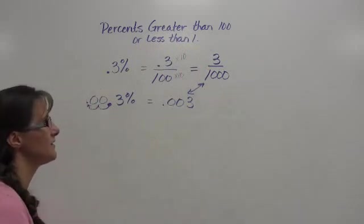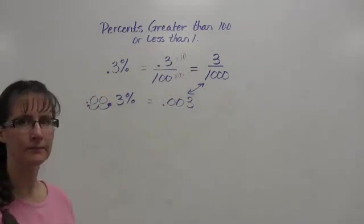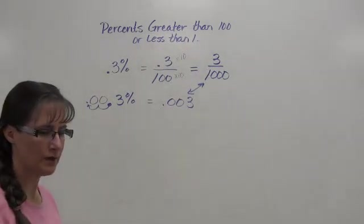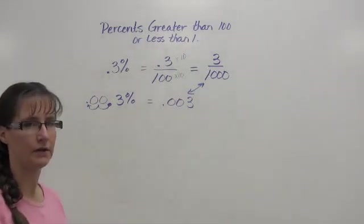Again, the same thing as three-one-thousandths written as a decimal. So let's see how this works for numbers that are more than 100.